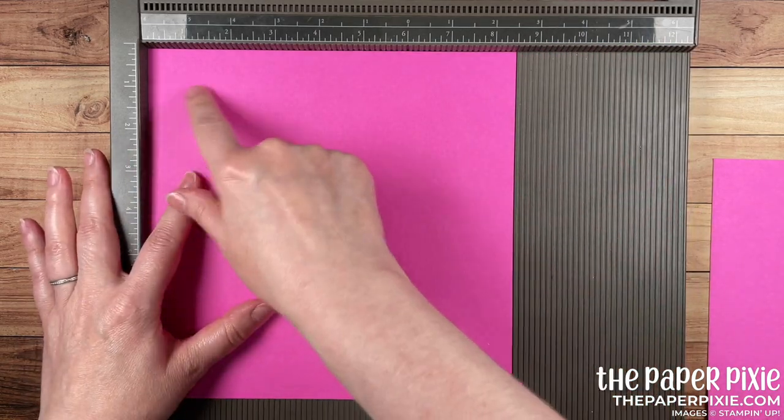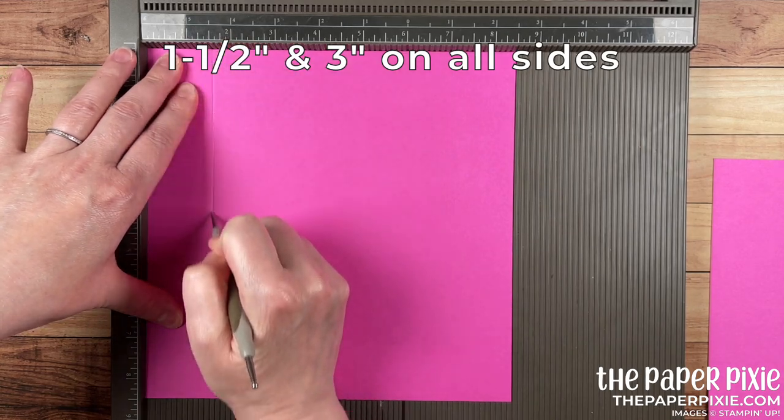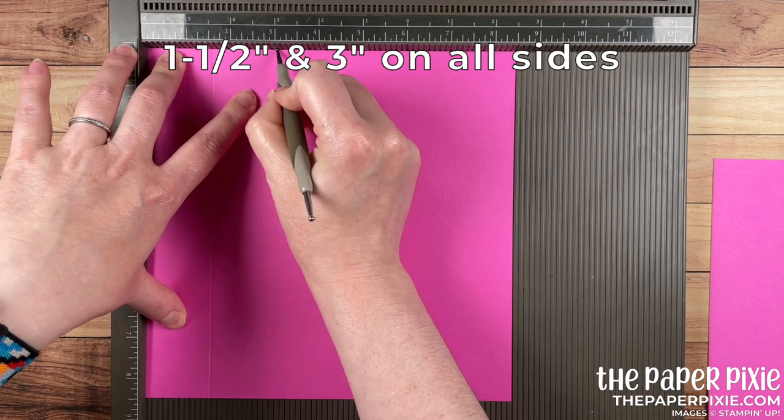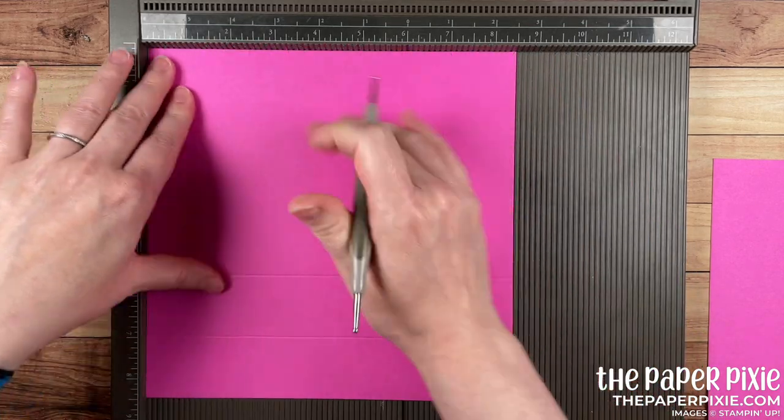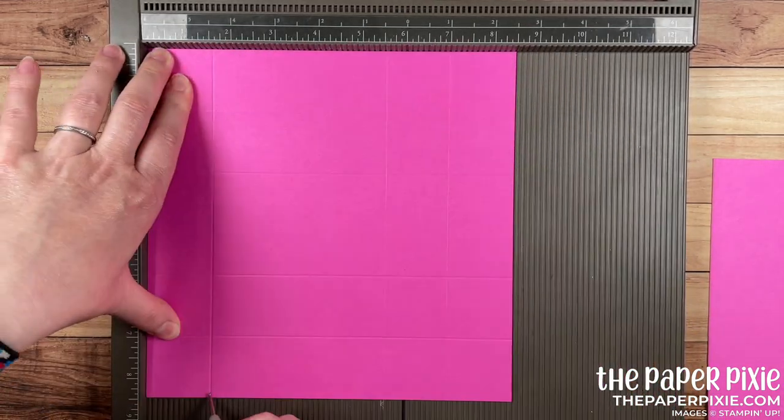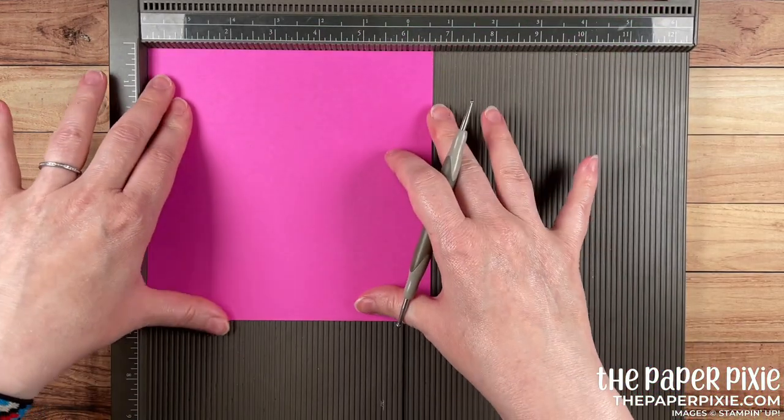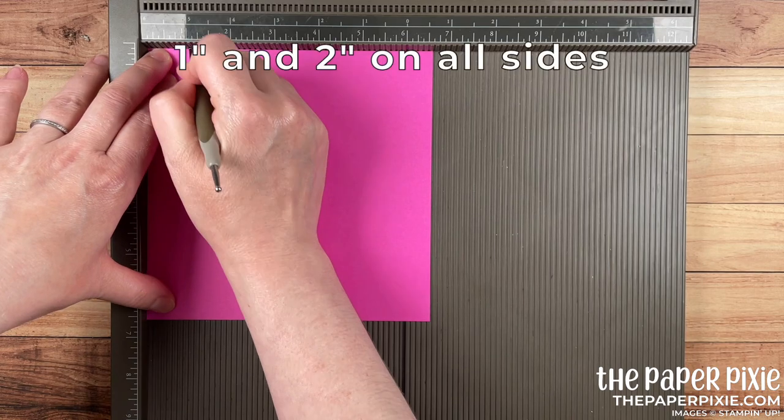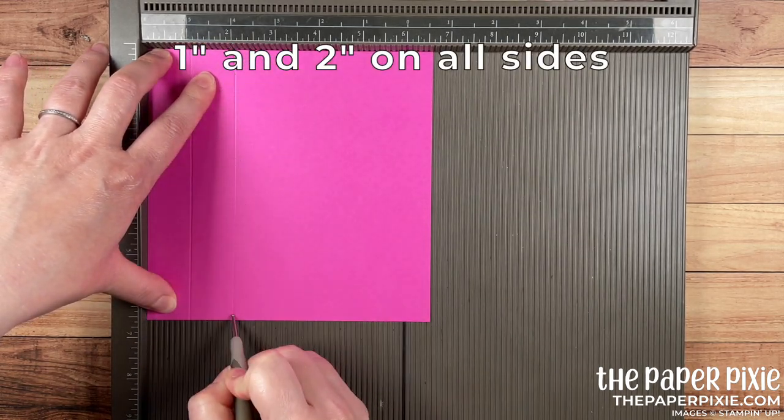Let's start with the base, this is the eight and a half by eight and a half piece, and we're going to score this at one and a half inches and three inches on all four sides. The scoring is done for this piece. Now bringing in the smaller piece for the lid, we're going to score this at one inch and two inches on all four sides.